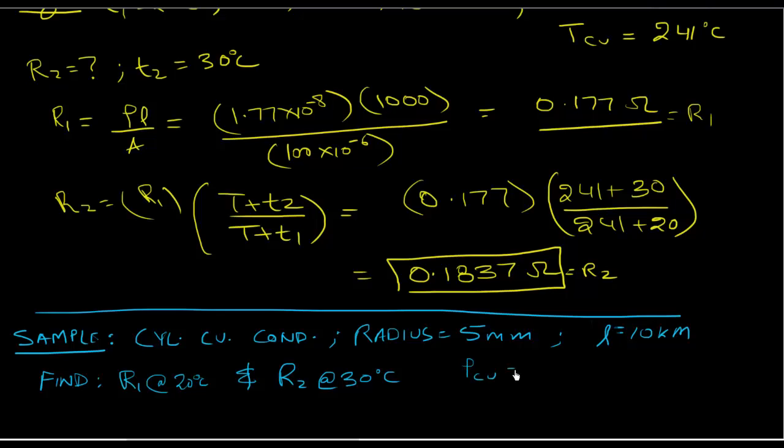You should already know this, but I will mention this again. The resistivity is 1.77 times 10 to the power of minus 8 ohm meter. And the temperature constant for copper is 241 degrees C.